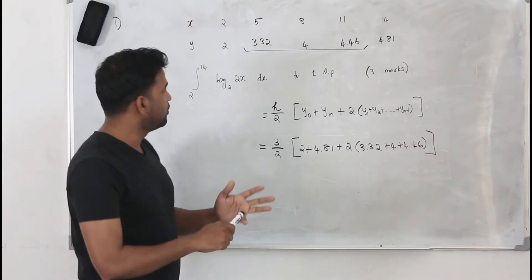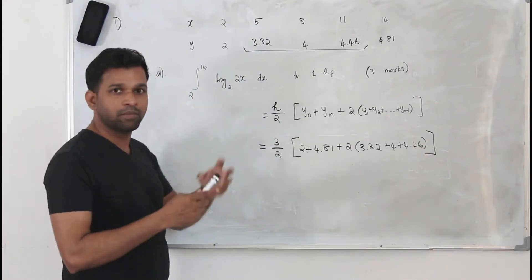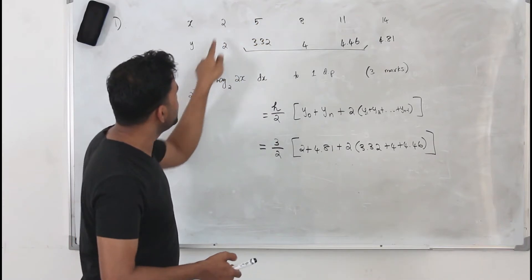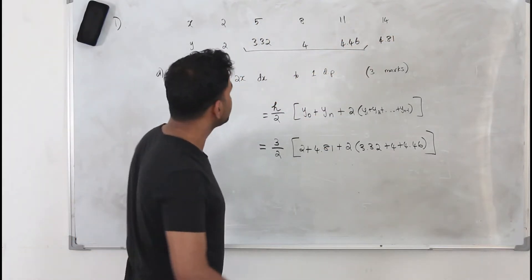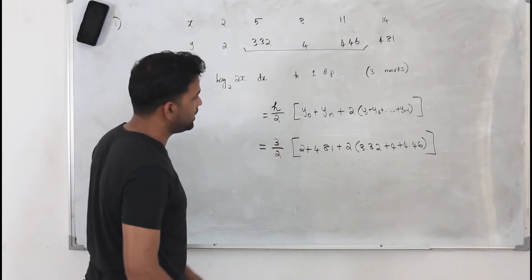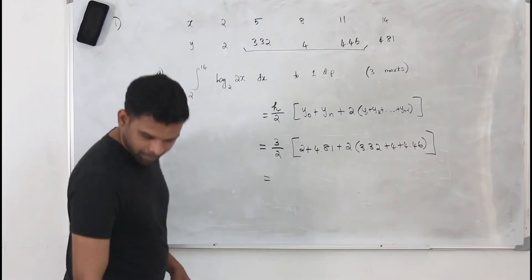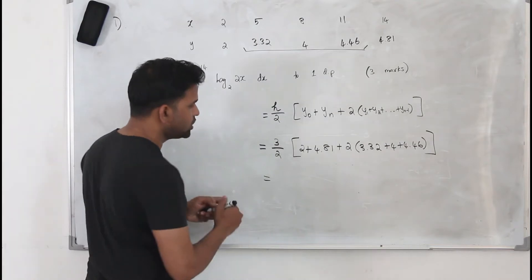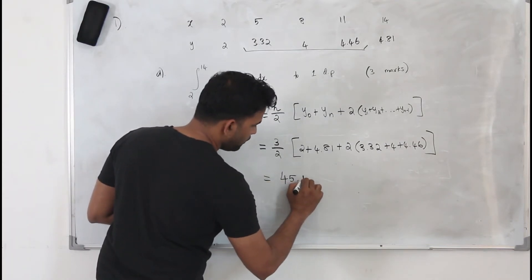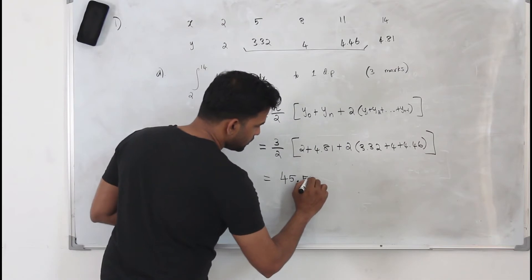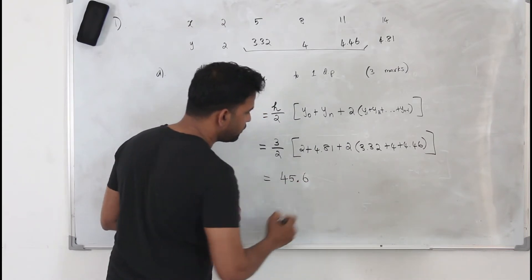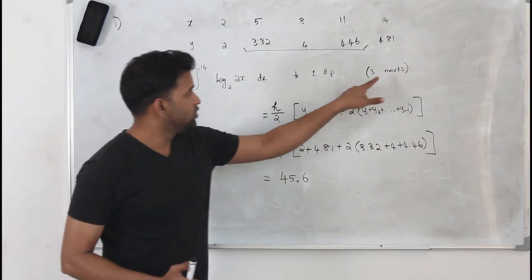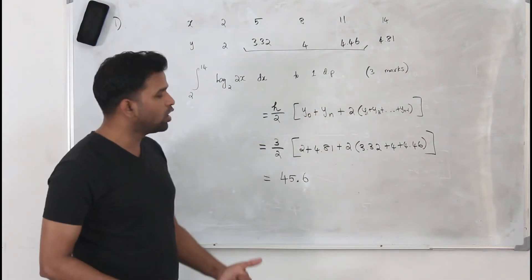To summarize: if the table is not given, find h = (b − a) / number of strips, start from the lower limit, keep adding h until you reach the upper limit, then find the corresponding y-values. My answer is 45.55..., which rounds to 45.6 to one decimal place. This question has three marks. Now let's move on to part b.